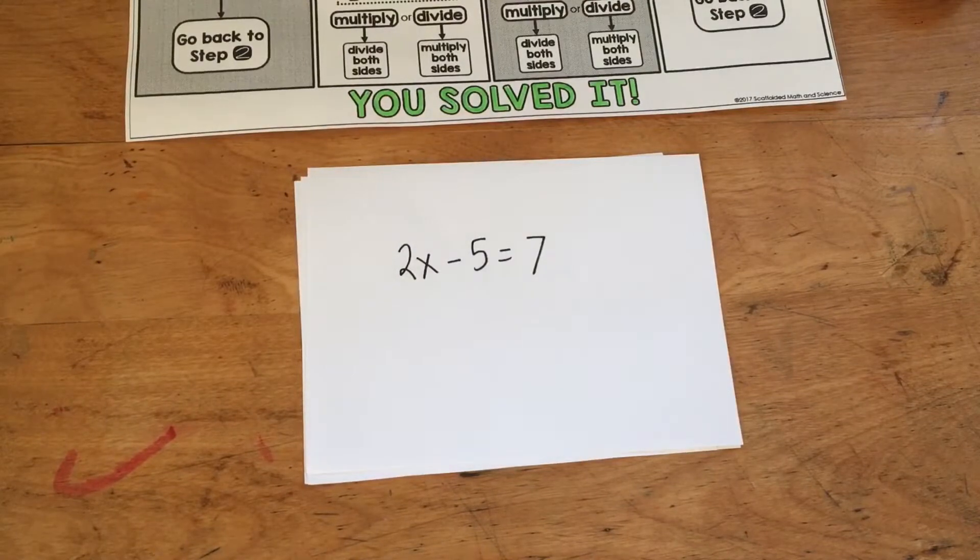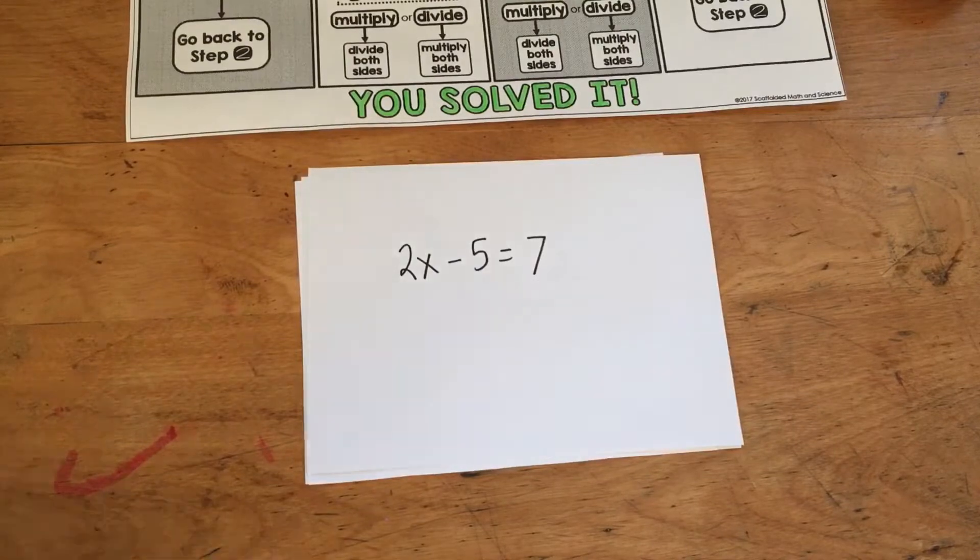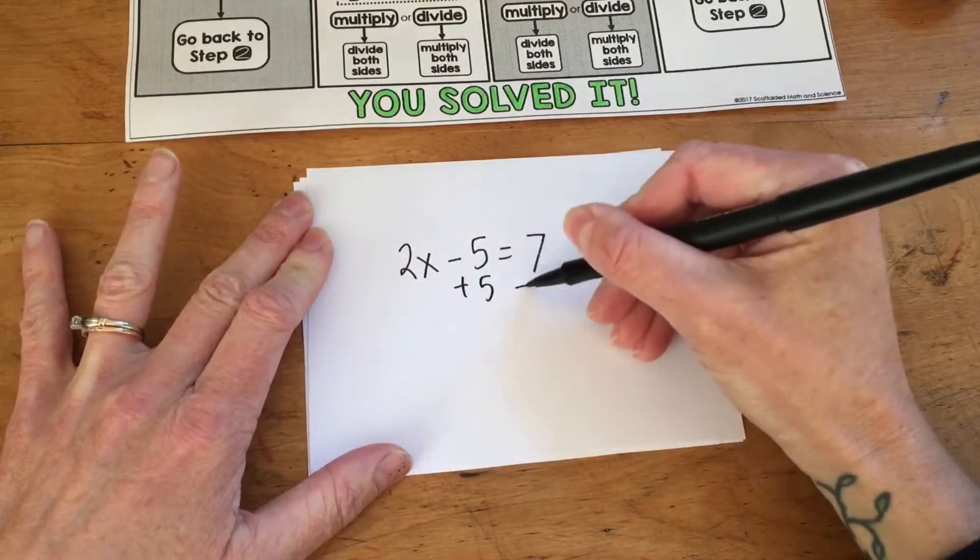And then I'll ask them, what's the opposite of minus 5? And they'll say positive 5. So then I tell them that we're going to add 5 to both sides.